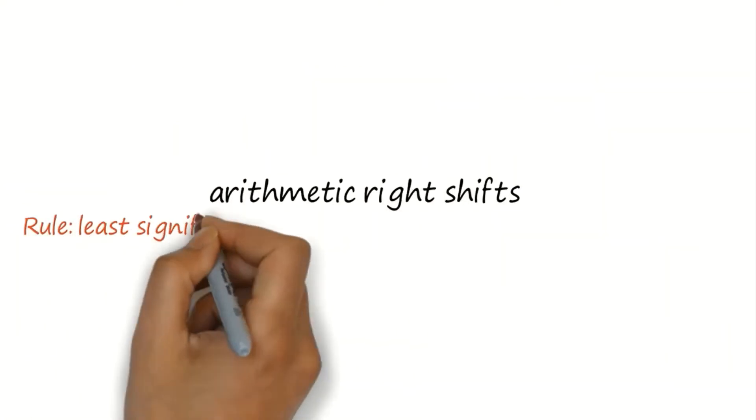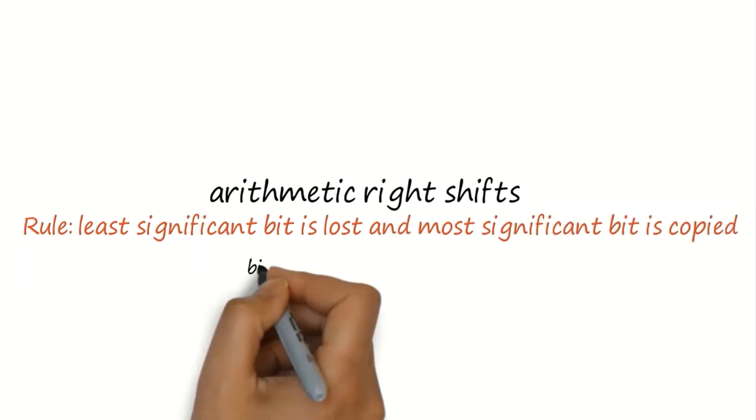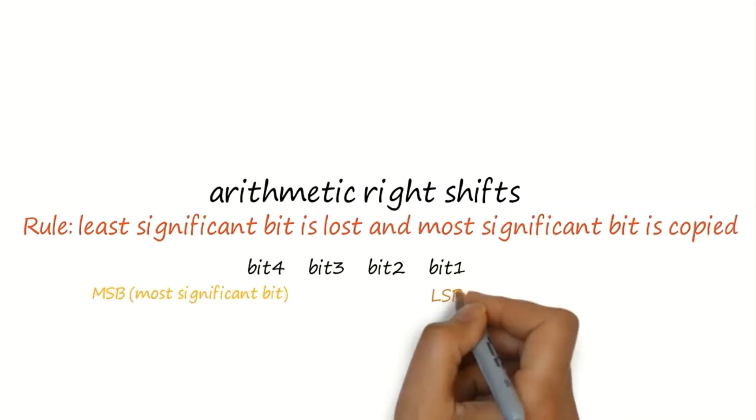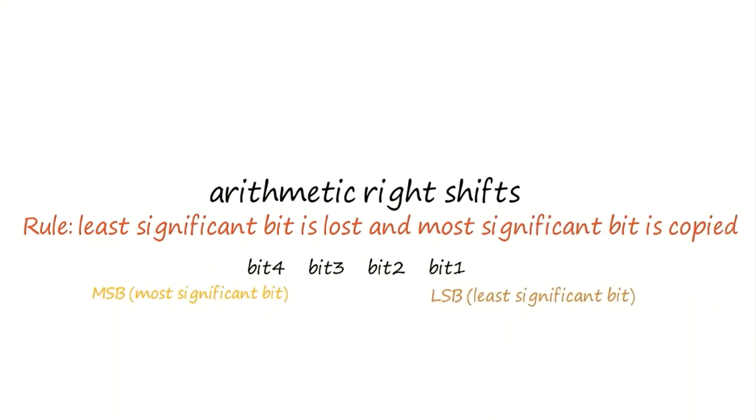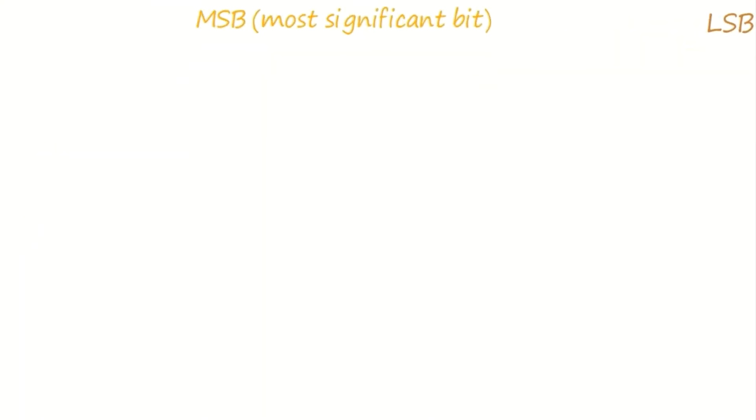On the other hand, shifting right with an arithmetic right shift, the least significant bit is lost and the most significant bit is copied. Here is the twist.